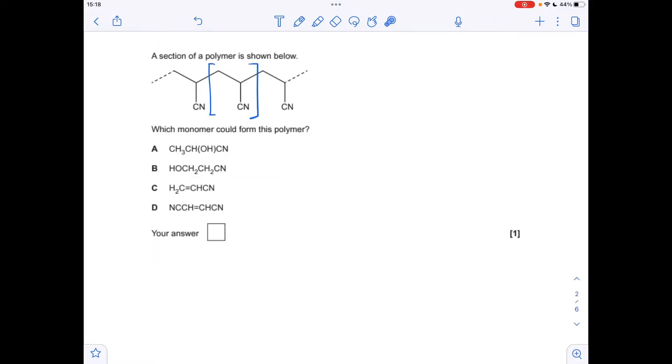To help with the last multiple choice one, I've put some square brackets around the repeat unit of this polymer. I'll draw the monomer now from that. There's the displayed formula, there's the structural formula, so you can see it matches with option C.